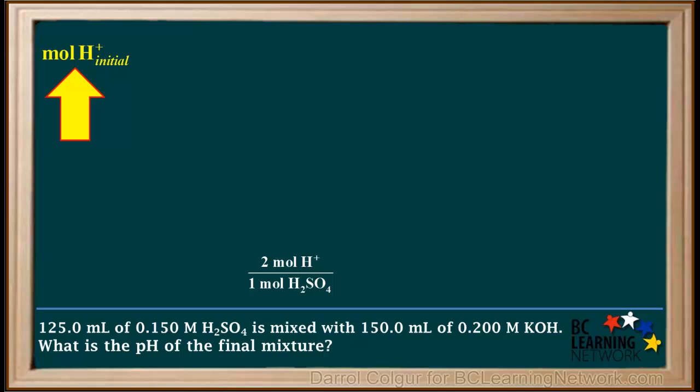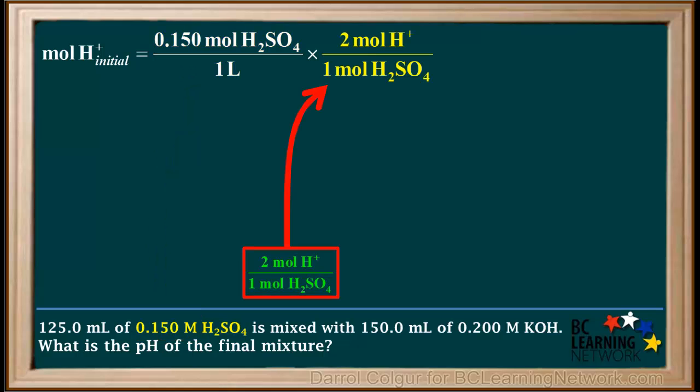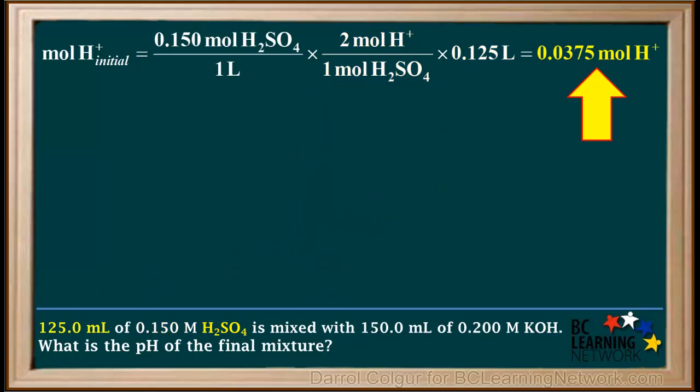Now we'll do the calculations for this problem. We'll begin by calculating the initial moles of H plus added. It's equal to 0.150 moles of H2SO4 per liter times 2 moles of H plus to 1 mole of H2SO4 times 0.125 liters, which comes out to 0.0375 moles of H plus. Notice moles of H2SO4 and liters cancel out. In order to preserve three significant figures, the lowest number of significant figures in the given data, the answer to this must be expressed to four decimal places.